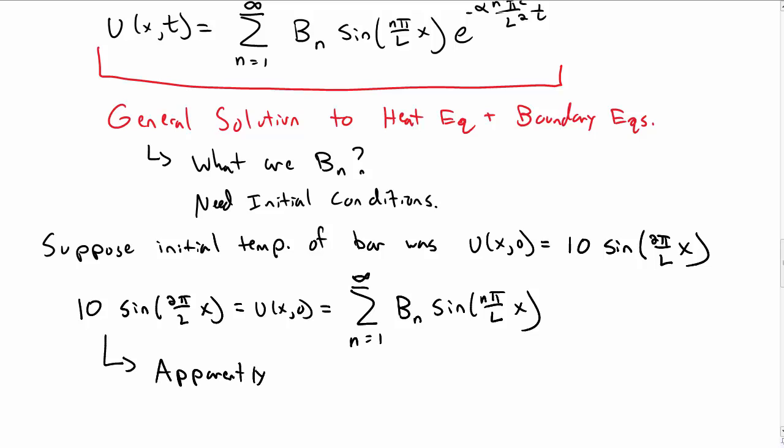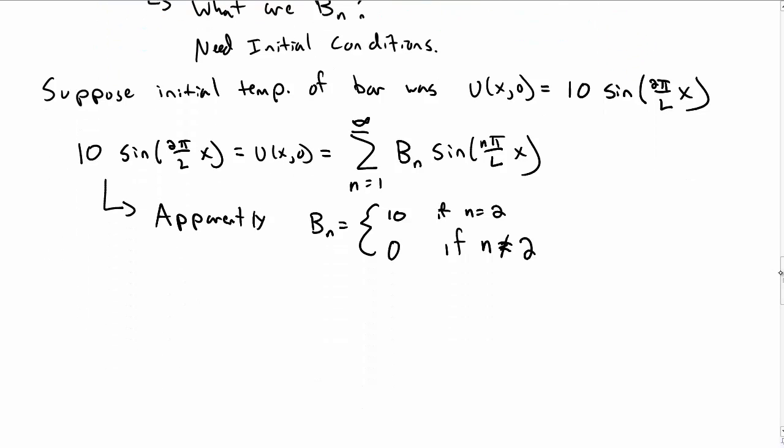And so now we stare at this and we say, how could we solve this? Well, apparently this means that B sub n is 10 if n is 2, and it's 0 if n is not equal to 2. That's one way we could solve this.